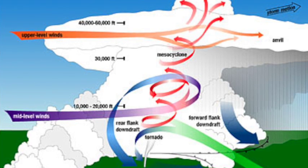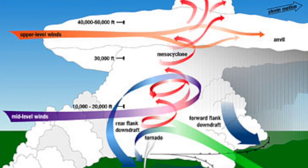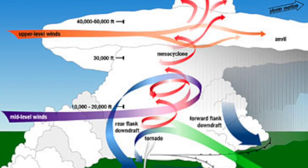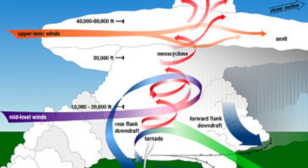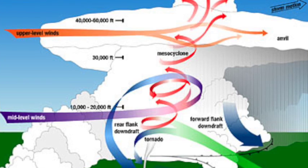Tornadoes typically occur in supercells, or another type of storm called squall lines, which hopefully you've learned about. I'm just going to run through quickly about a supercell thunderstorm.